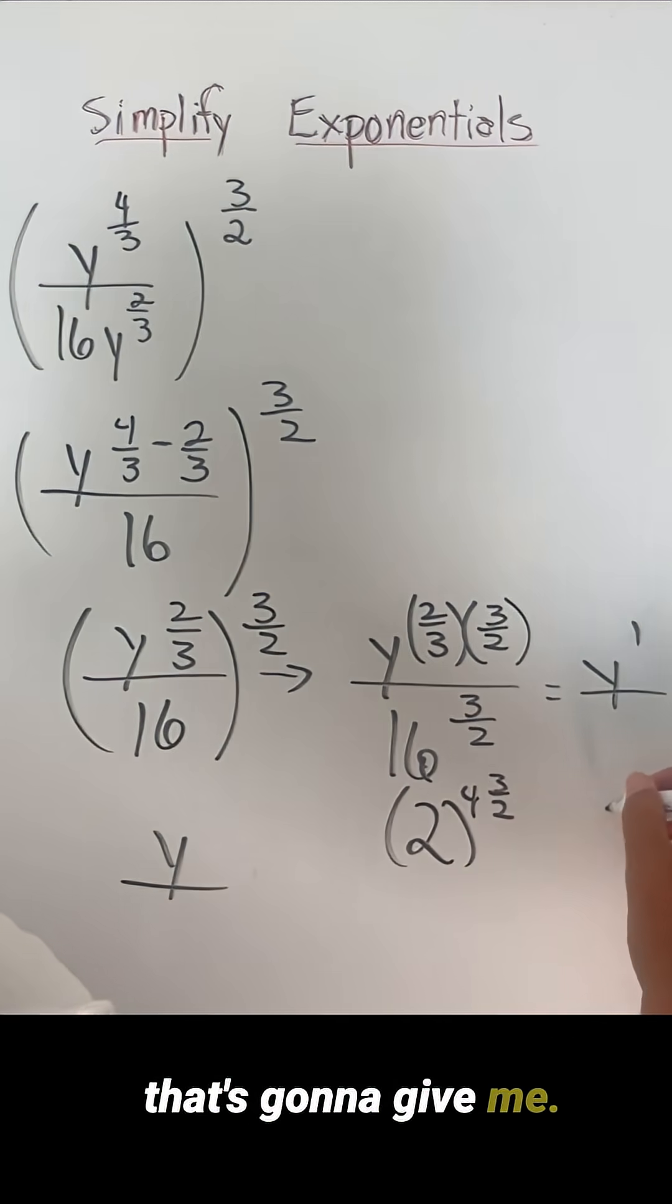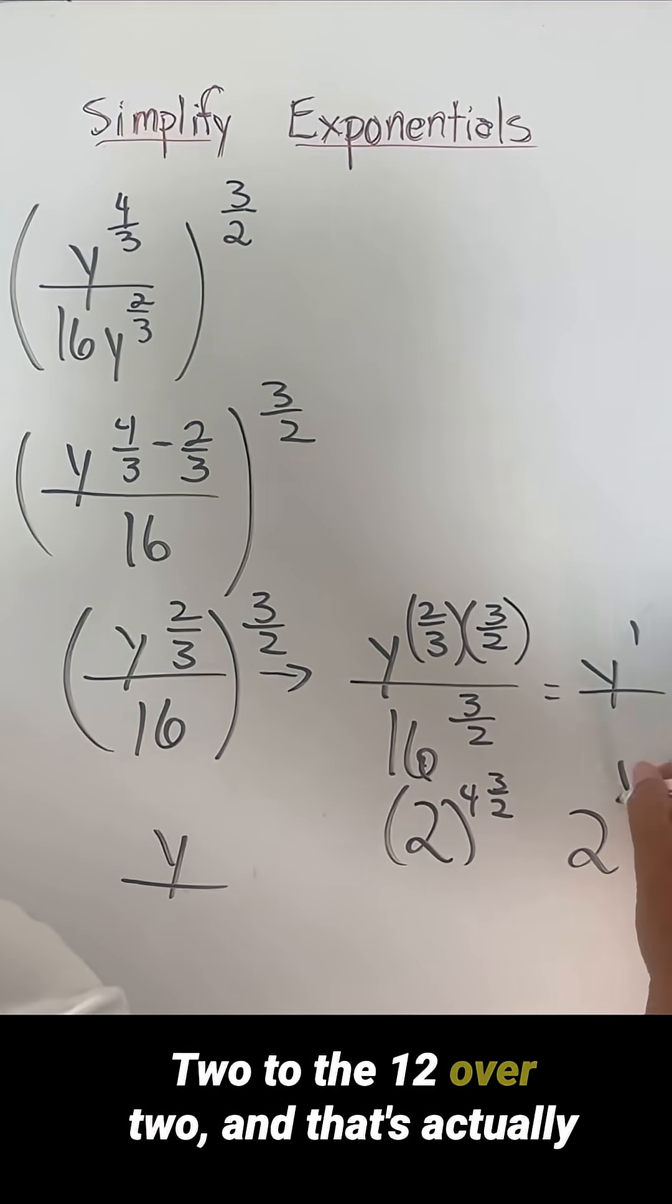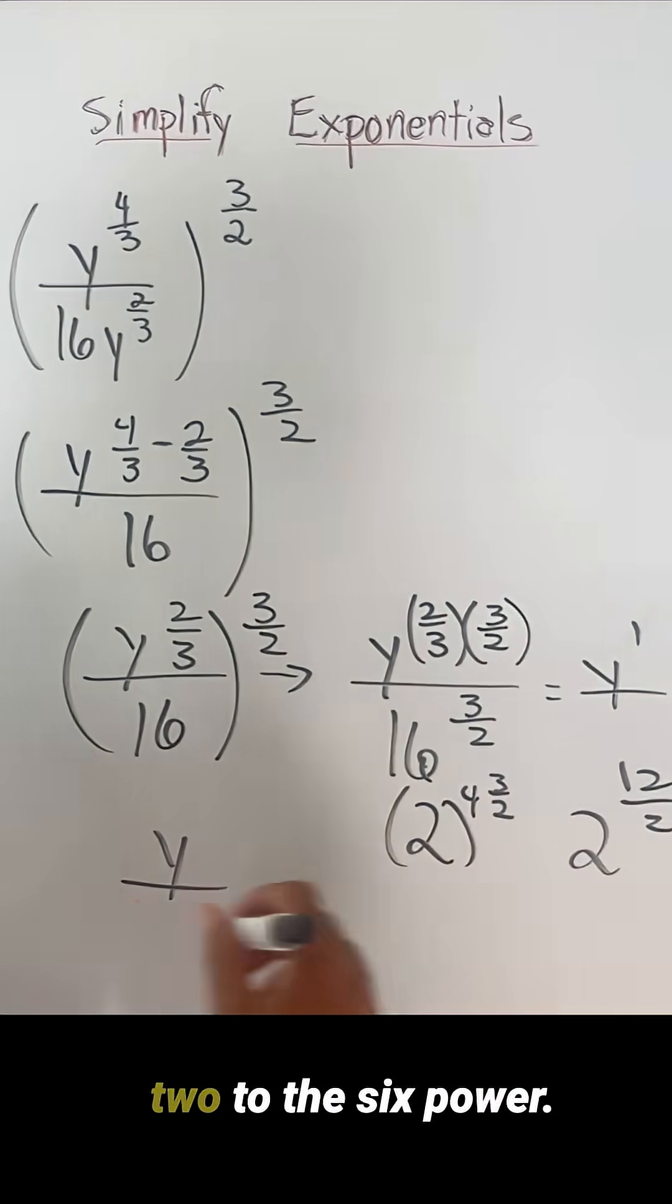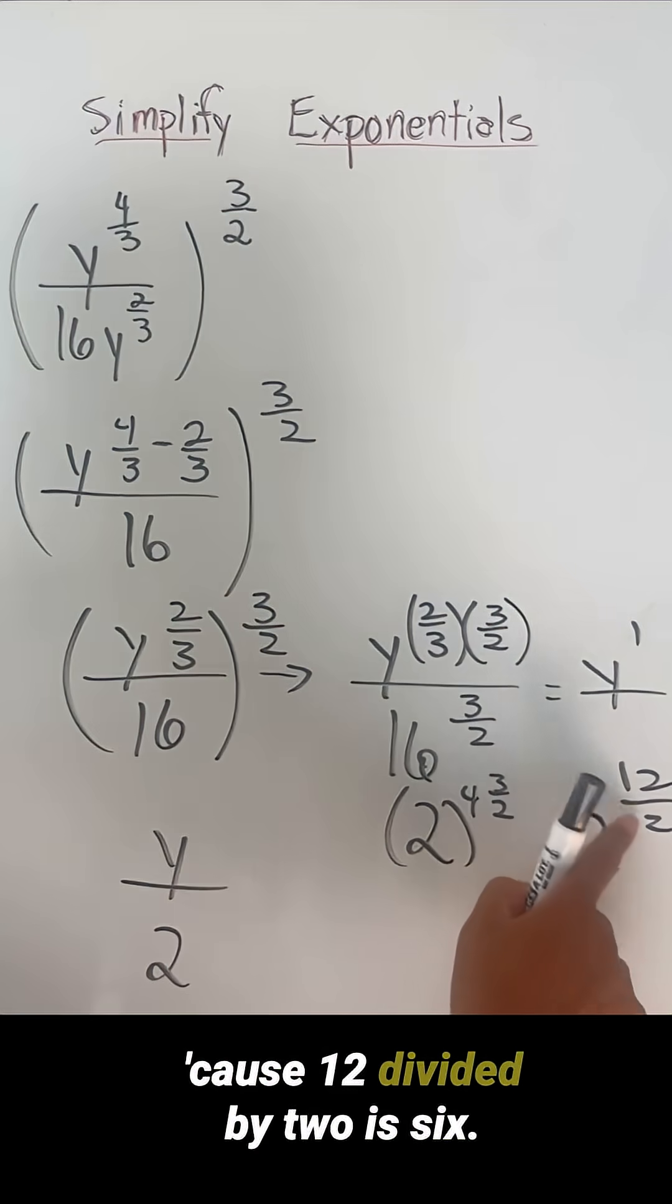This power times this power, that's going to give me two to the 12 over two. And that's actually two to the sixth power, equals 12 divided by two is six.